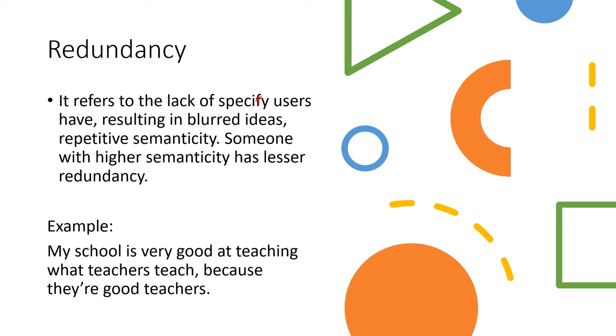For example, someone with lesser semanticity and higher redundancy might say, my school is very good at teaching what teachers teach because they are good teachers. You see how every single of these phrases is talking about the same thing even though they're different words. That is redundancy.